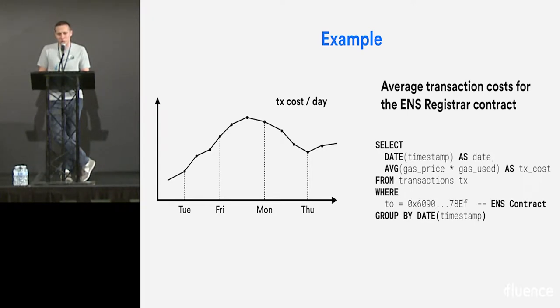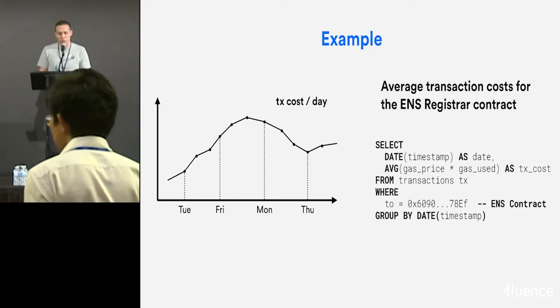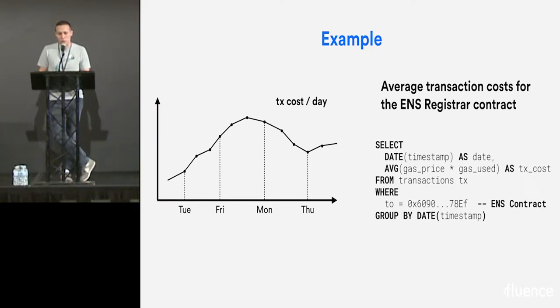Or I might want to draw a graph of CryptoKitties births over time, or calculate average transaction cost for the ENS contract. That's a pretty simple SQL query. You just need to take all the transactions coming into the smart contract, take the gas price, take the gas used, multiply them, group by days, and you have a nice time series graph. You can do it fairly easy in traditional architecture.